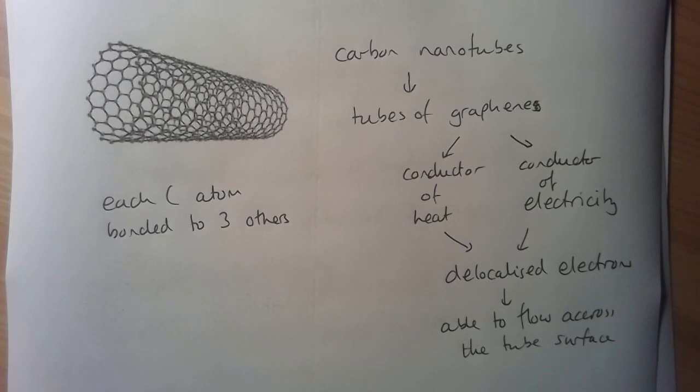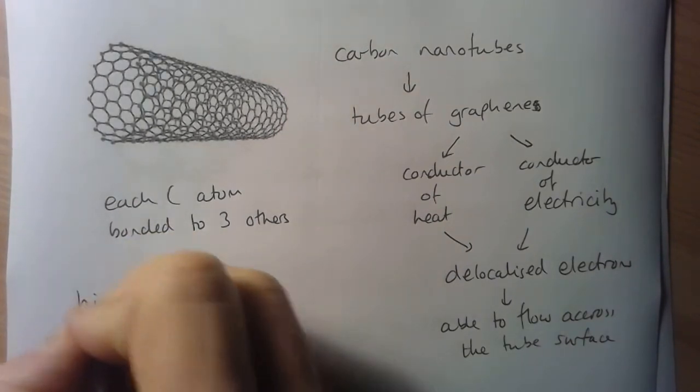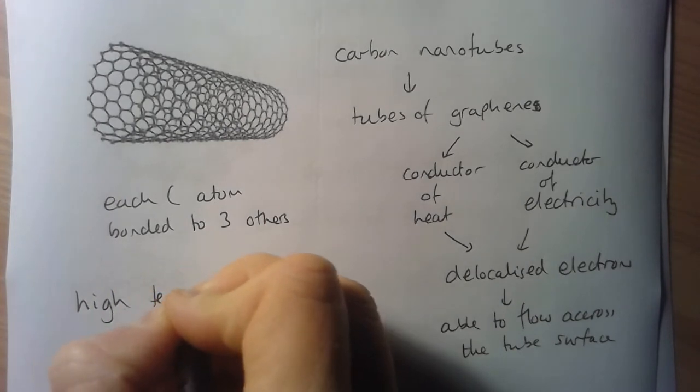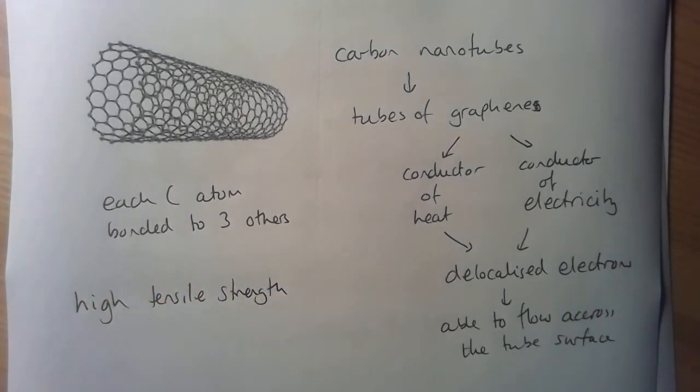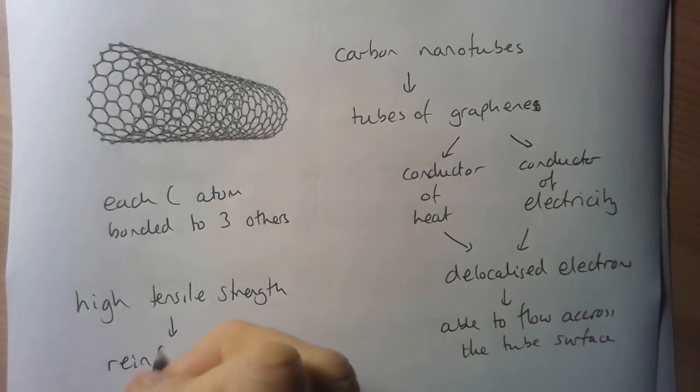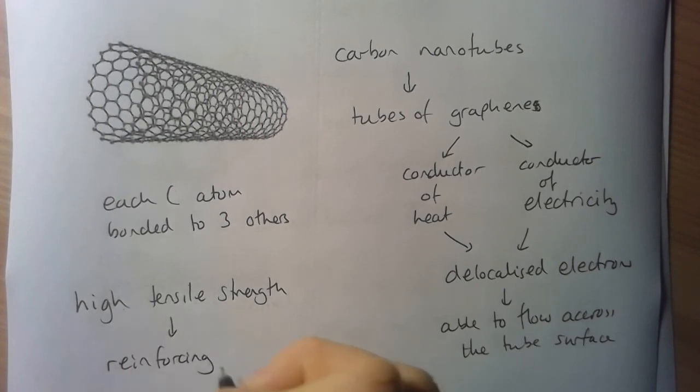But one of the really important things about carbon nanotubes is they have a very high tensile strength. And what that high tensile strength means is that they're going to be very important in the future at reinforcing lightweight building materials.